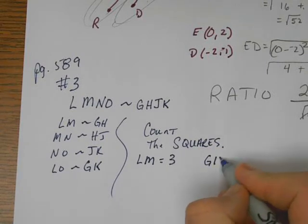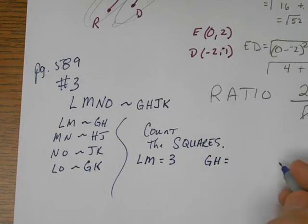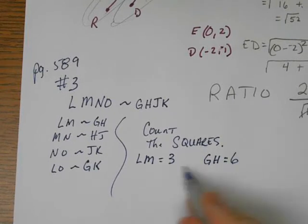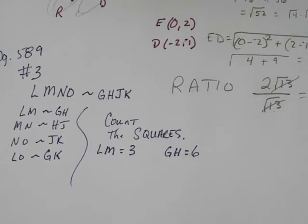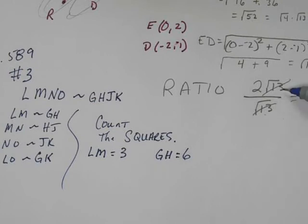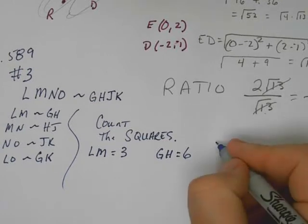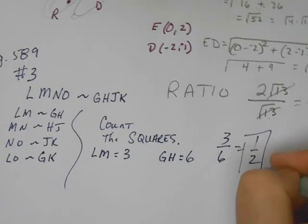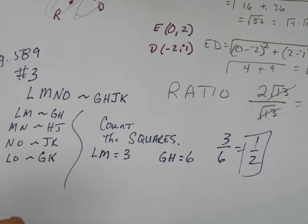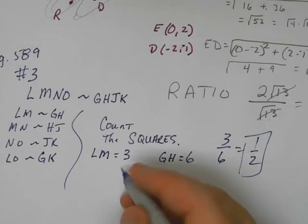So here we go. What's the length of LM, Sears? Count them across, how many is it? Thank you. And Sears, what's the length of GH? Thank you. If I were to compare these as a ratio, don't tell me three, that's just how different they are. How do I compare these as a ratio? What did I do over here? As a fraction I can go 6 over 3 or 3 over 6, does not matter. So it should be 1 to 2 or 2 to 1 depending which way you're going.